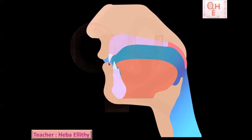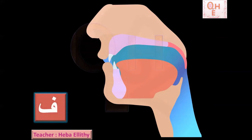Letter Fa is coming from the area described — exactly. A very important point: when I put the teeth on the inside of the lower lip, I have to be sure I push hard with the teeth and the voice is very clear. Letter Fa is one of the weakest letters in Arabic, so if you don't make it very clear, the sound will disappear. Go ahead and see some examples.